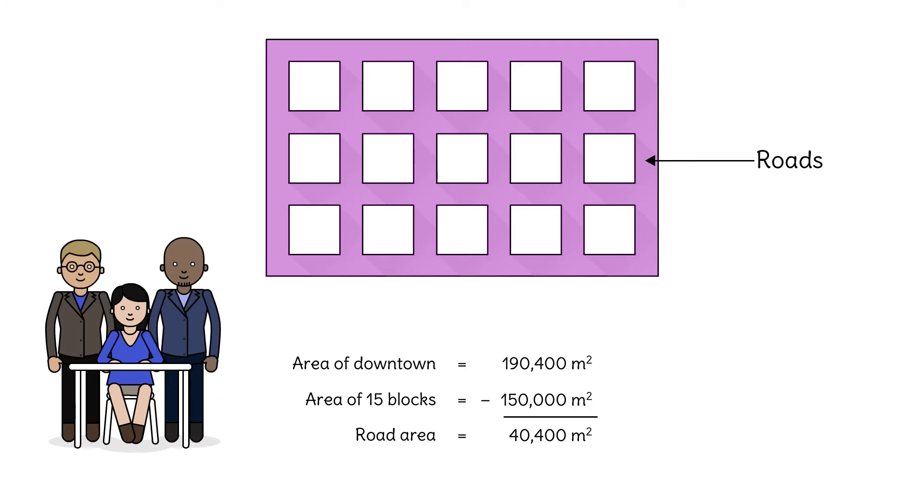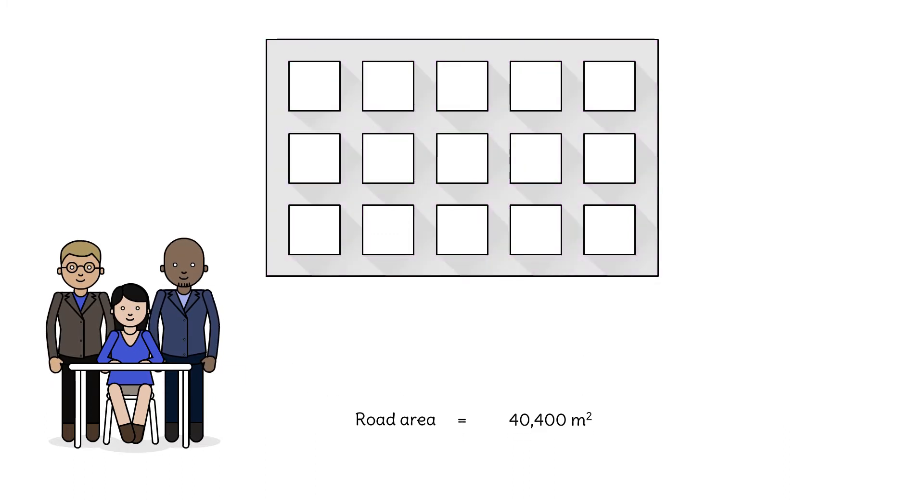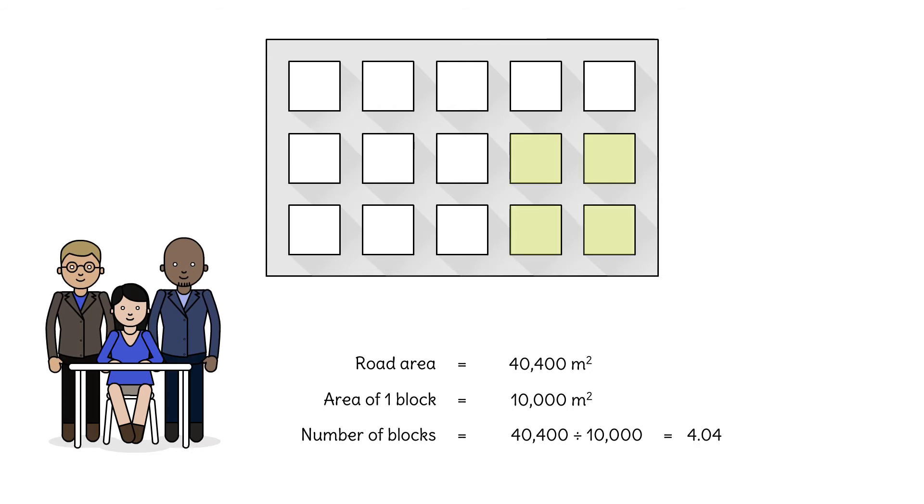So how many blocks does the city need to turn into parks? The road area is 40,400 square meters. That's the park area. Each block has an area of 10,000 square meters. Dividing shows us that a little more than four blocks have to be turned into parks.